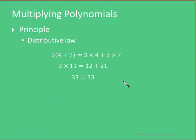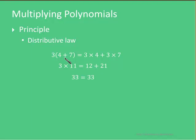I said initially that the technique we use is based on the distributive law. So let's review the distributive law with this very simple example here. 3 times (4 plus 7) is equal to 3 times 4 plus 3 times 7. If we come down this track we see this gives us 12 plus 21 which gives us 33. Of course if we add 7 and 4 first we get 11, and then 3 times 11 gives us 33 also.